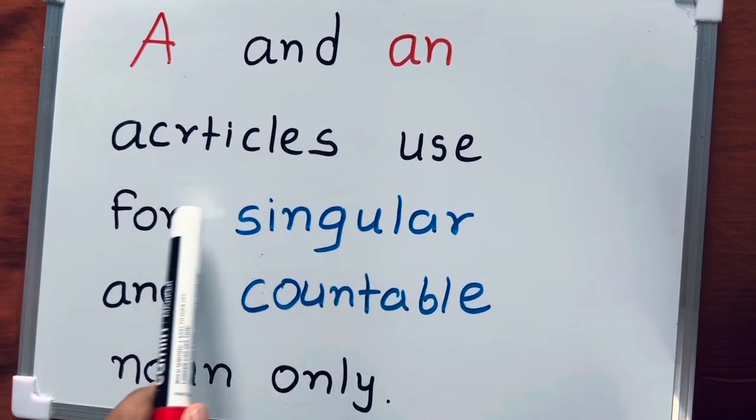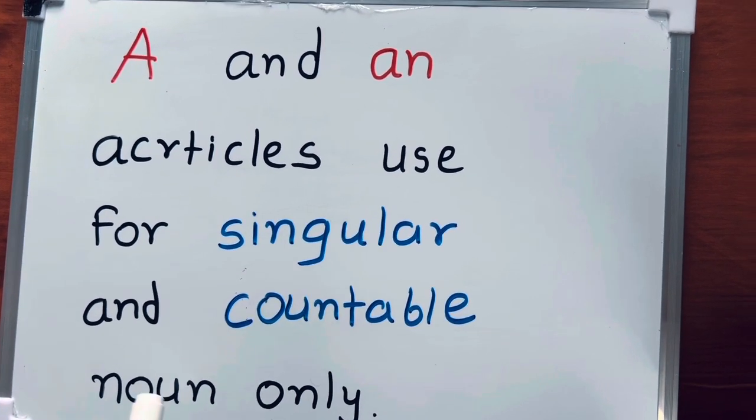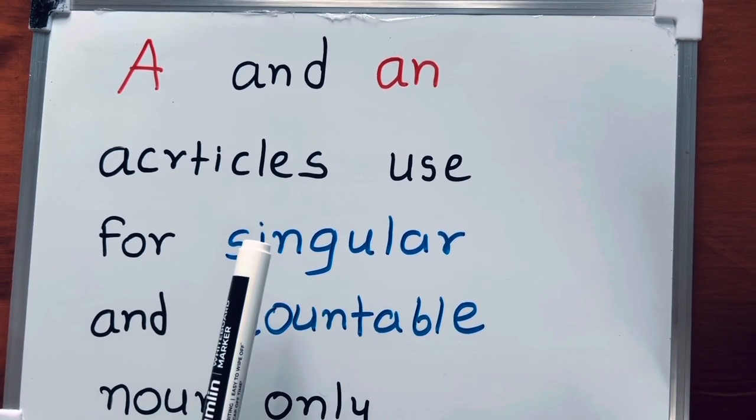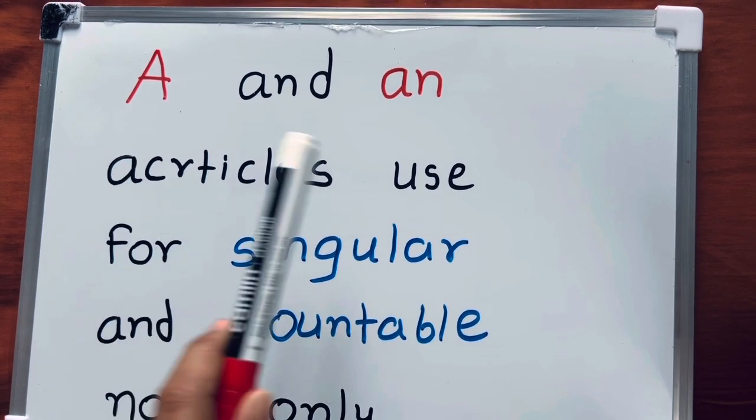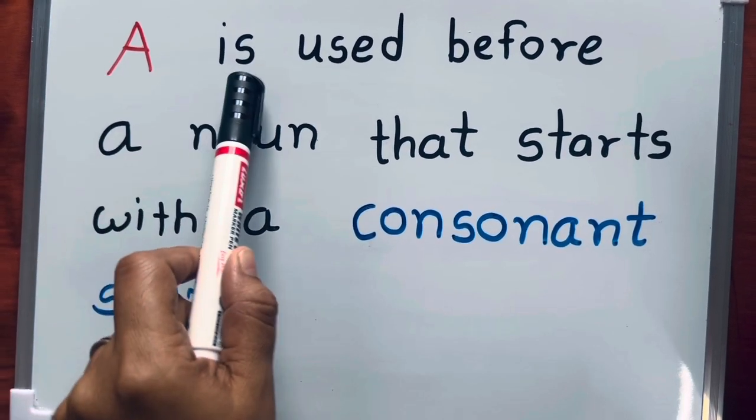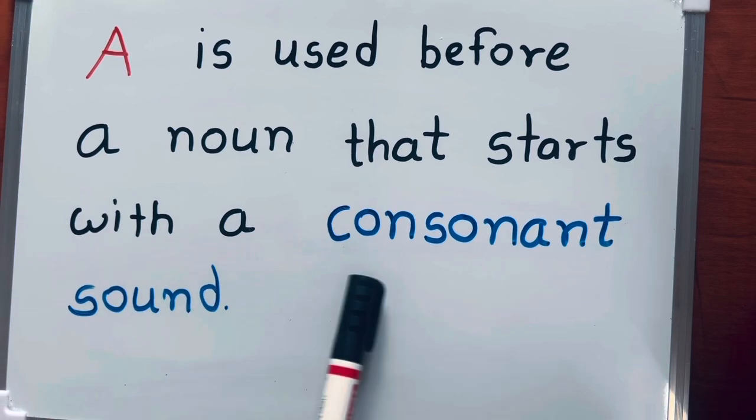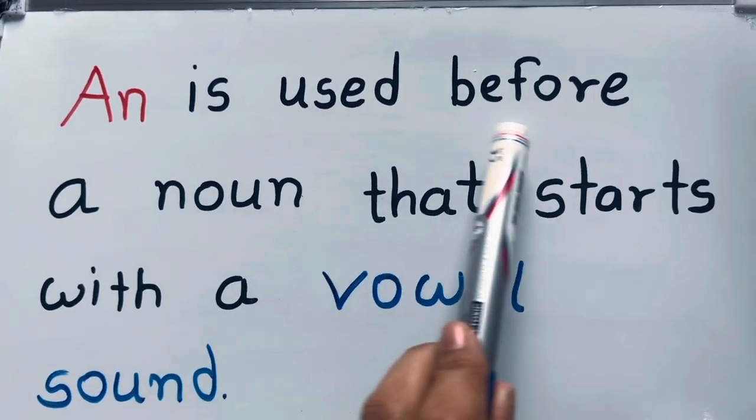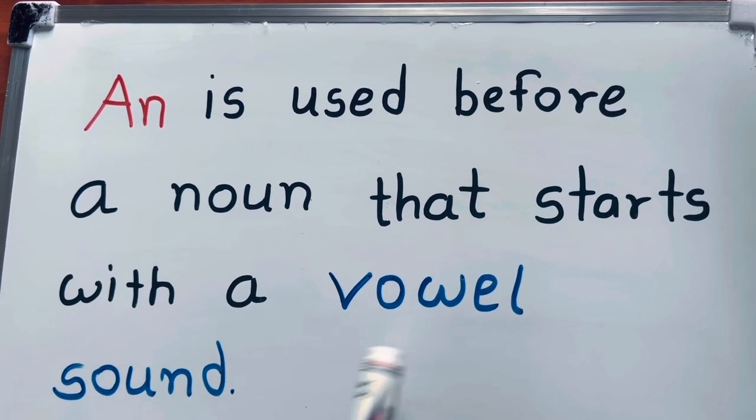A and AN articles are used for singular and countable nouns only. If the noun is plural or uncountable, then we cannot use A or AN articles. A is used before a noun that starts with a consonant sound. Article AN is used before a noun that starts with a vowel sound.